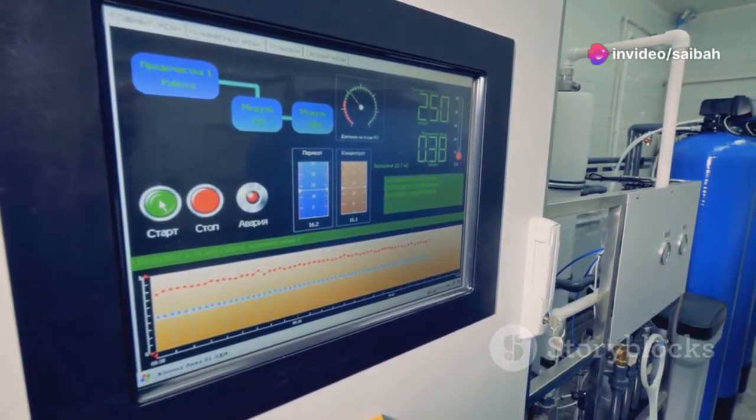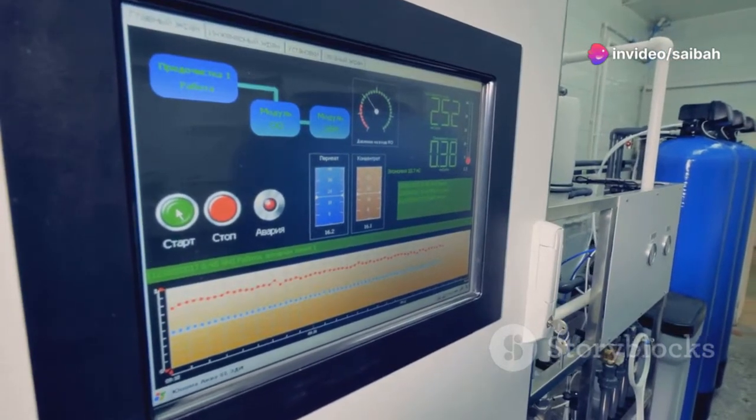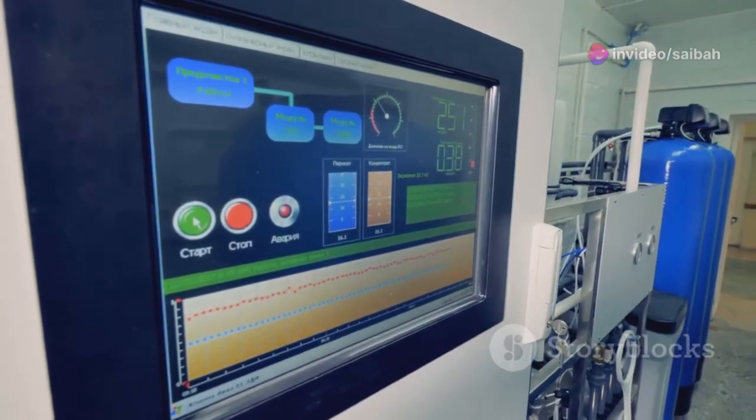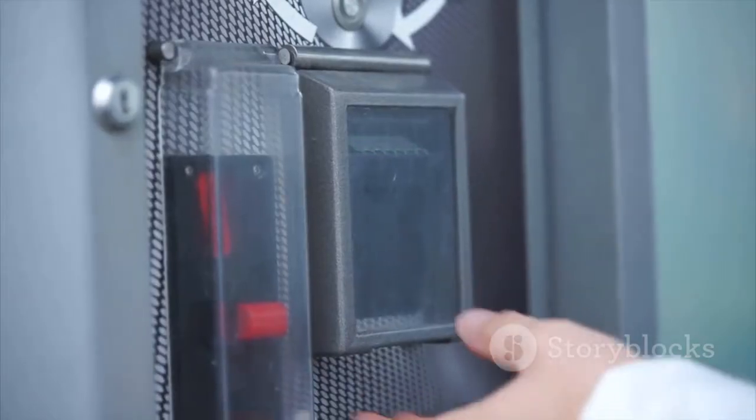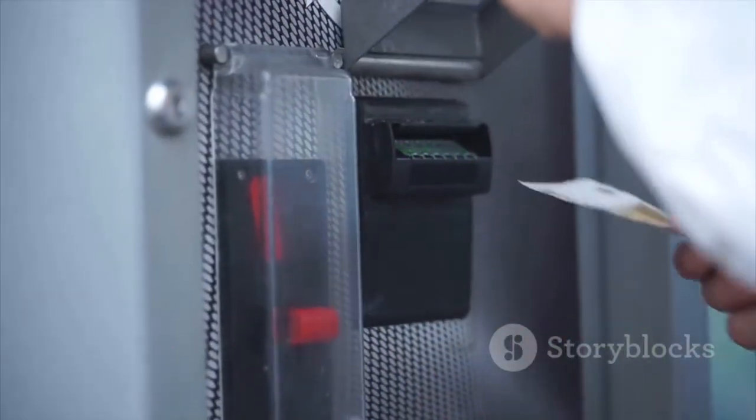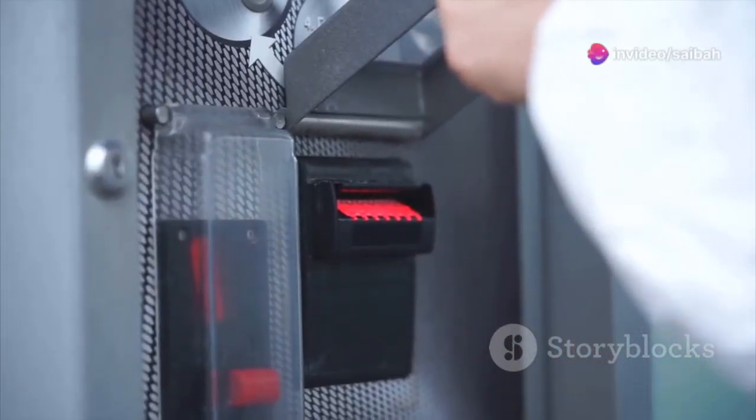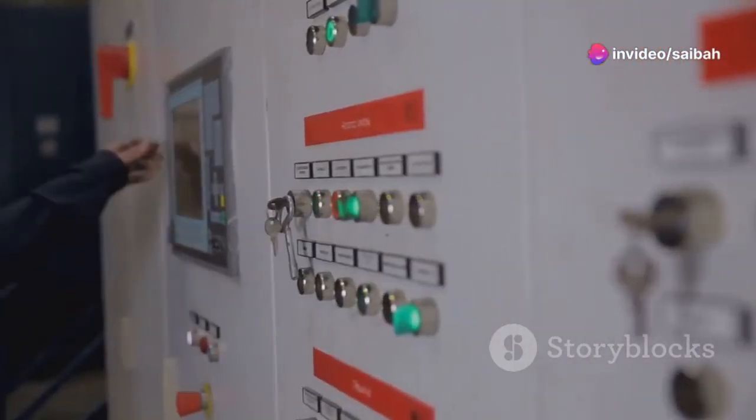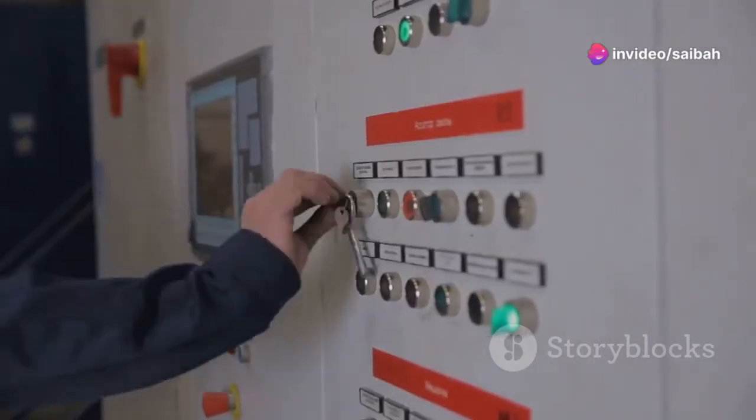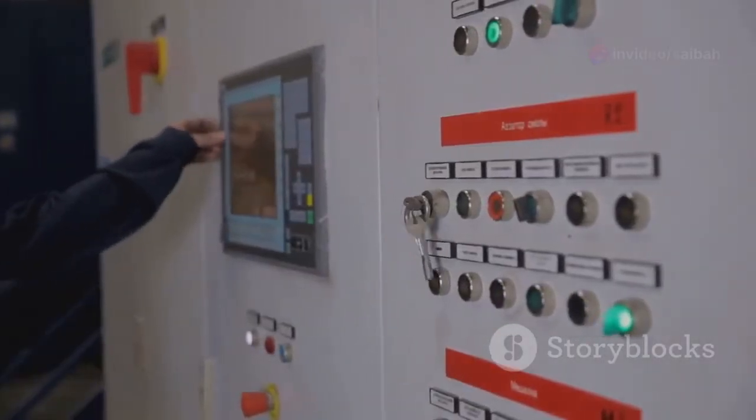On the other hand, HMI, or Human Machine Interface, acts as the bridge between human operators and the intricate machinery. This is the user-friendly interface that allows operators to monitor, control, and interact with the industrial process in a visual and intuitive manner. While both systems play crucial roles in industrial control, their functionalities and applications differ significantly.